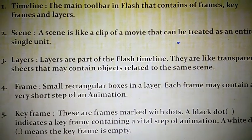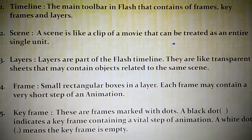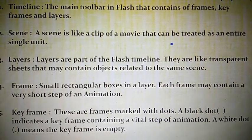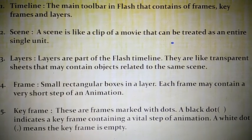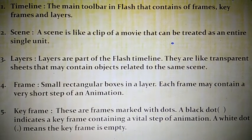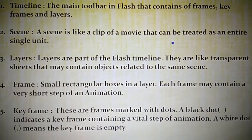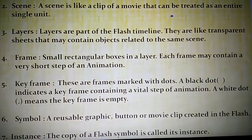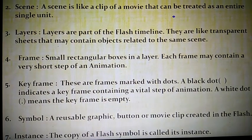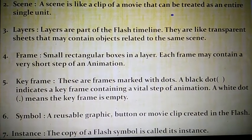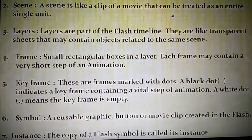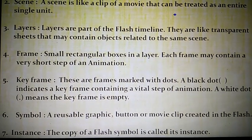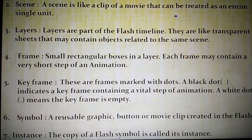Key frame — these are frames marked with dots. Black dots indicate a key frame containing a little strap of animation; a white dot means the key frame is empty. Sixth: symbol — a reusable graphic, button, or movie clip created in flash. Seventh: instance — the copy of a flash symbol is called its instance.